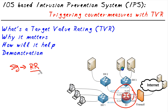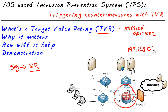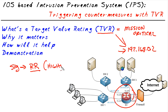That risk rating is a combination of several factors. One of those factors is called a TVR — a target value rating. If we wanted to improve the performance of our IPS in defending against attacks against a specific critical server, we would tell the system that that critical server is mission critical. Every time there's a signature destined to that specific critical server, the risk rating is going to be higher. The more critical a server is, the higher the risk rating is going to be.